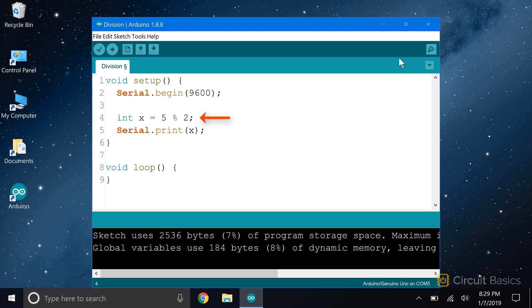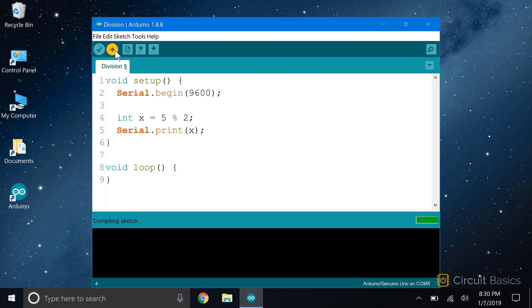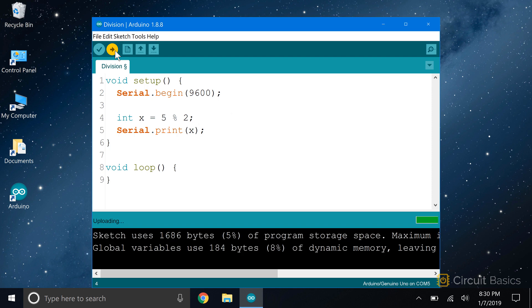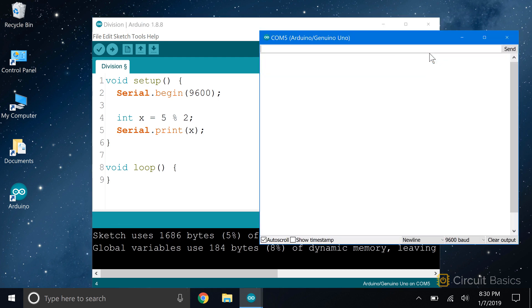So what would we expect from this? 2 goes into 5 two times, and we're left with a remainder of 1. So 5 modulus 2 should be 1. Modulus isn't that common, but you'll run into it from time to time.